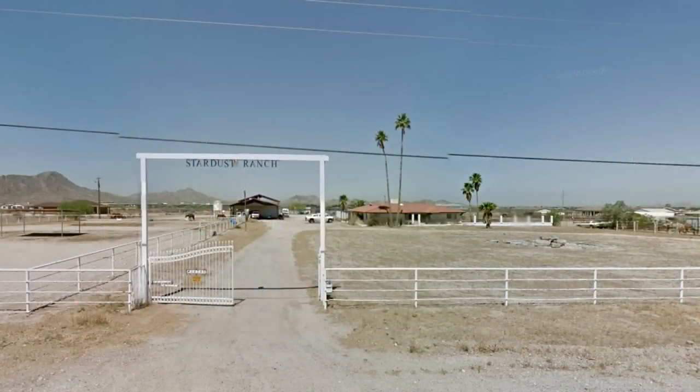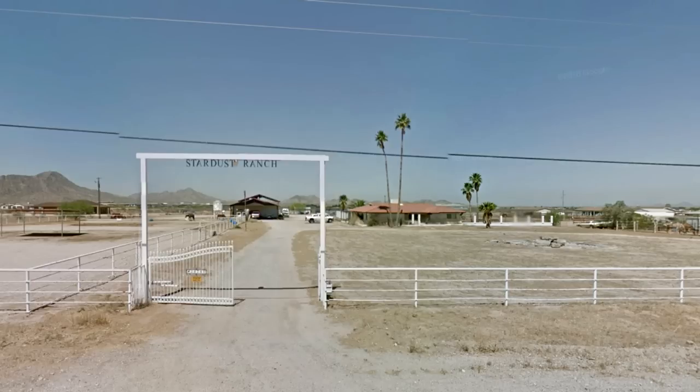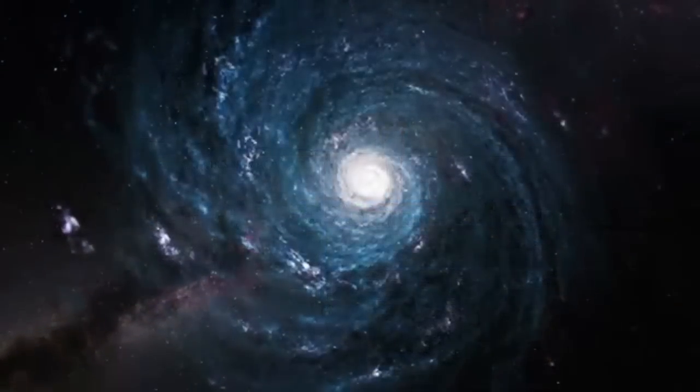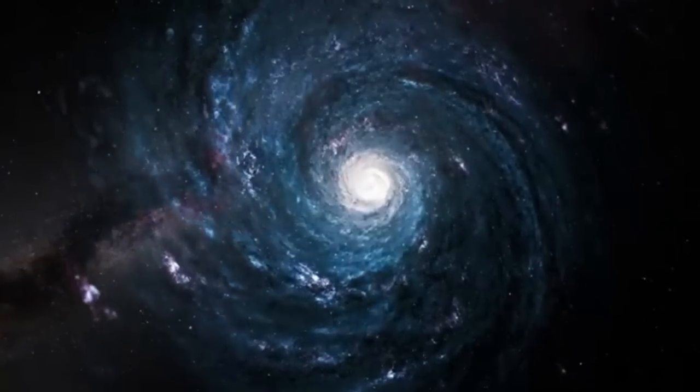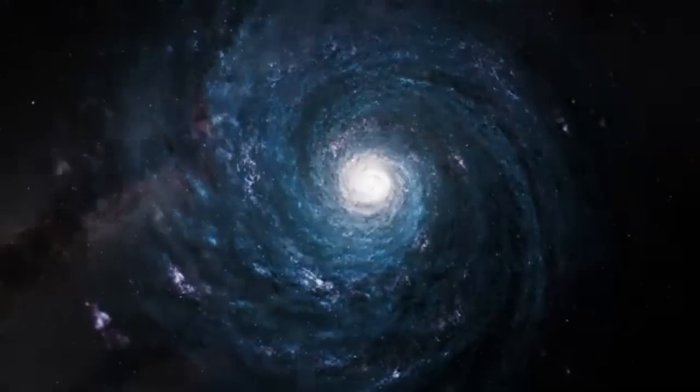E isso aconteceu. John e Joyce compraram Stardust, um rancho que ficava em uma região bem isolada na época, sem nenhuma outra propriedade por perto por quilômetros. Em inglês, Stardust significa poeira estelar. Finalmente, um sonho concretizado, um rancho onde eles poderiam criar cavalos. Na verdade, aquele local era o único pelo qual eles poderiam pagar naquela época.